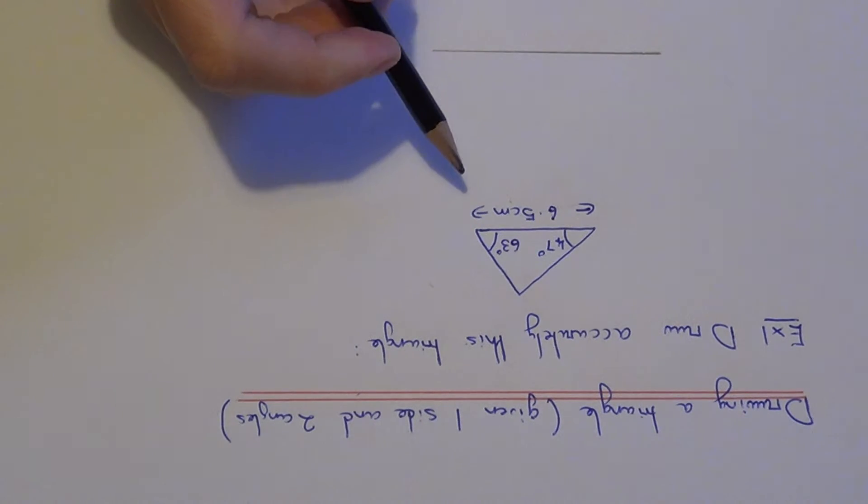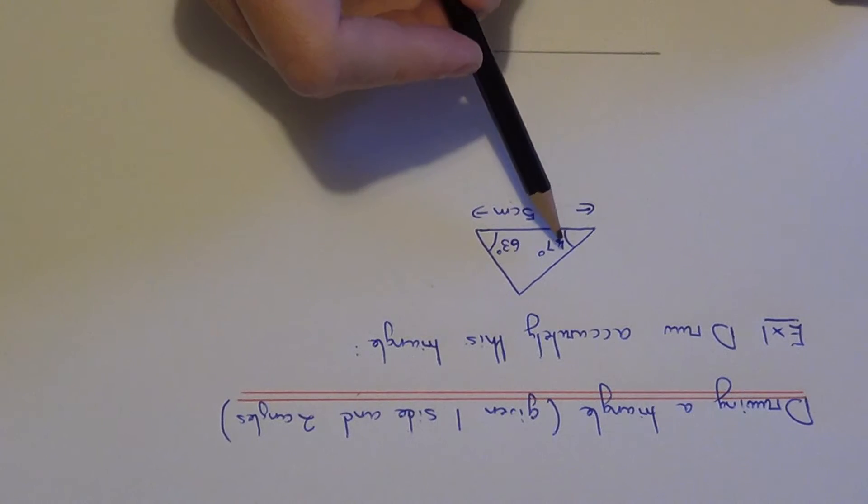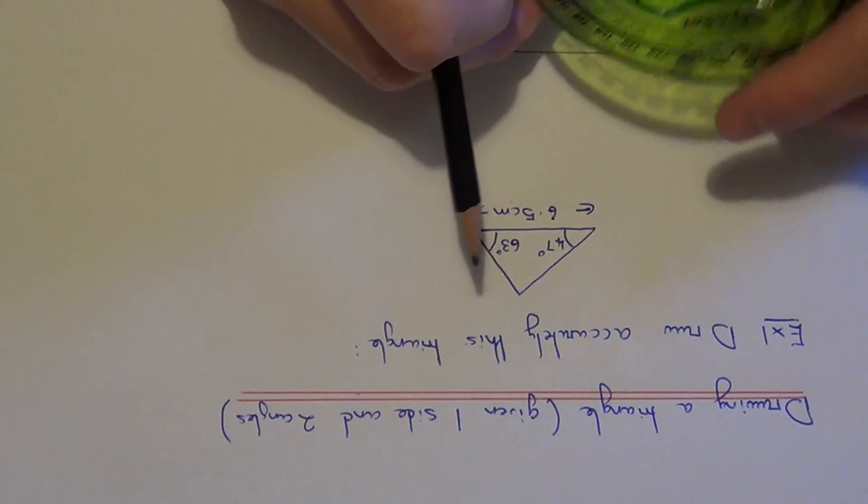Next, measure the angles which you are given. It doesn't matter which one you do first. Let's start with the 47-degree angle.